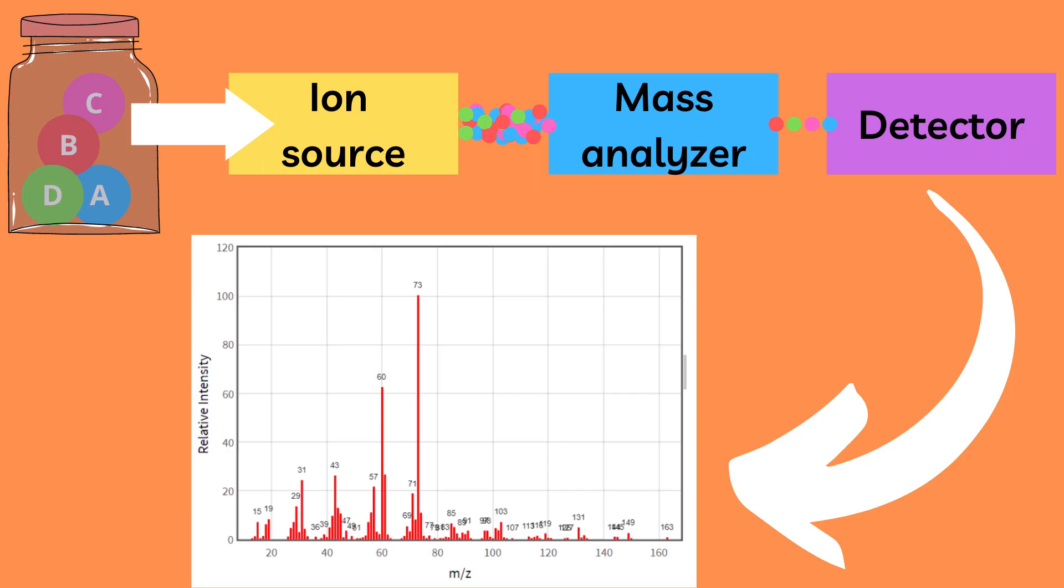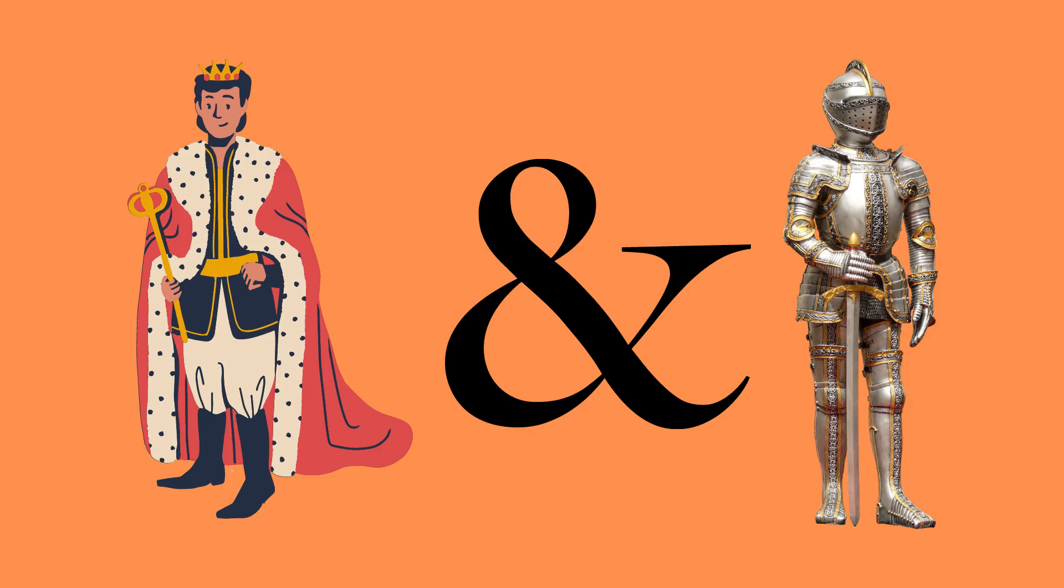Orbitrap mass spectrometry is a type of mass analyzer and the orbitrap itself looks something like this. It works based on two main principles.